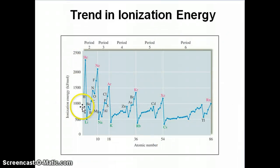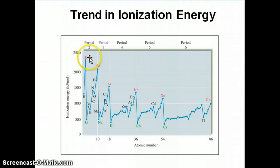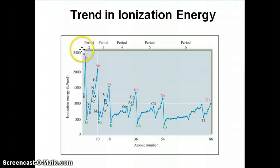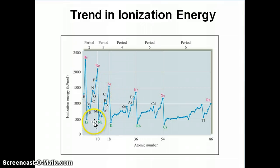We're actually going to look at the trend now in ionization energy. This graph shows actual values of ionization energy provided in terms of the atomic mass of the elements and the period they're in. The top points for each period are visible here. Period 1 has two elements — hydrogen and helium. Period 2 is this plot, period 3 is this one, period 4 is here, period 5 is this plot, and period 6 is this one.